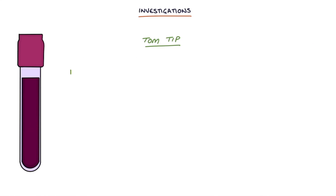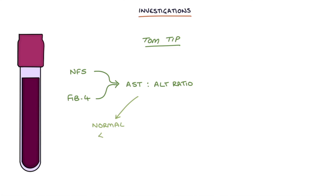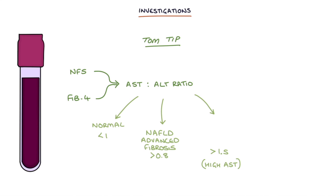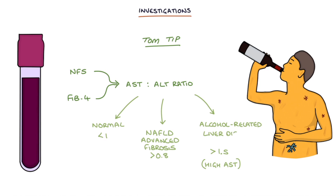A Tom tip: both the NFS and the FIB-4 scores use the AST to ALT ratio to assess the severity of liver fibrosis. The normal AST to ALT ratio is less than 1. A ratio greater than 0.8 in NAFLD suggests advanced fibrosis. An AST to ALT ratio greater than 1.5, meaning a disproportionately high AST compared to ALT, indicates alcohol-related liver disease rather than non-alcoholic fatty liver disease.